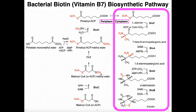From malonyl-CoA methyl ester, this sequence of reactions is basically repetitive catalysis by fatty acid synthase, an enzyme that lengthens fatty acid chains. Instead of one carbon between the two carbonyls, we now have five — so the chain has been lengthened by four carbons. That gives us pimeloyl-ACP methyl ester, and then BioH hydrolyzes off that methyl group to give us pimeloyl-ACP.